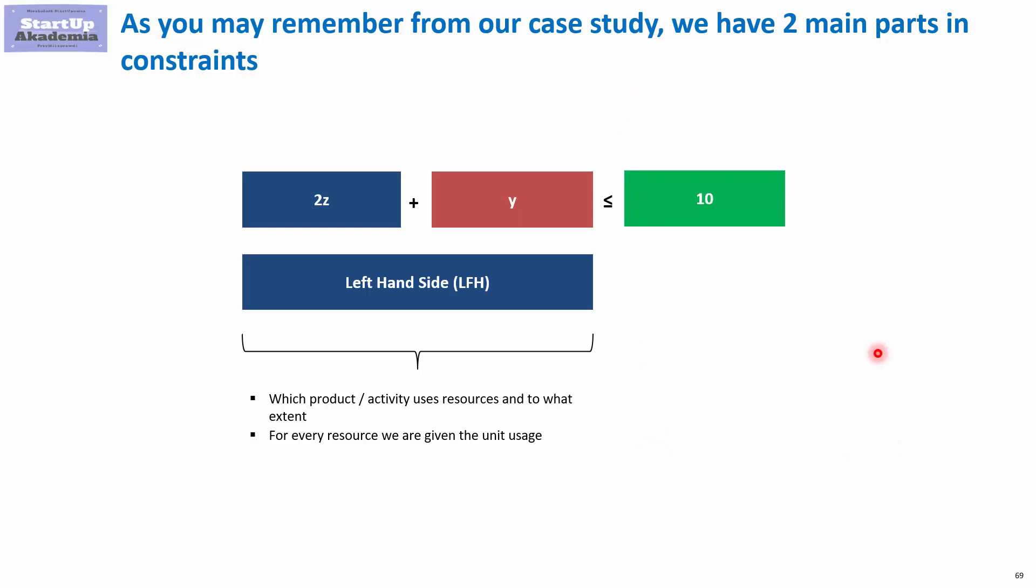Obviously we also have the right-hand side, and this describes simply how much of a given resource we have. In some cases, it is what we have to achieve, so it can also be used to set an additional production goal. For example, as we had in the case of the burgers, we wanted them to be above zero in the first option and above two in the second option.